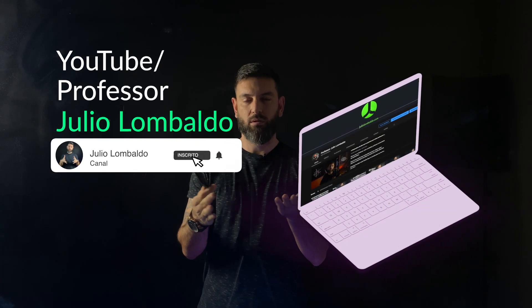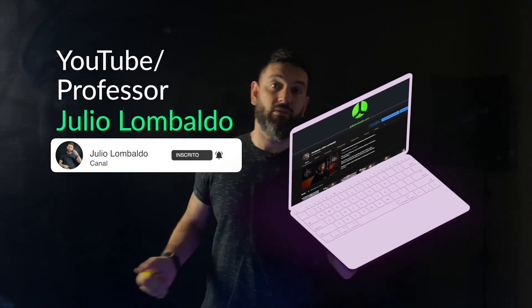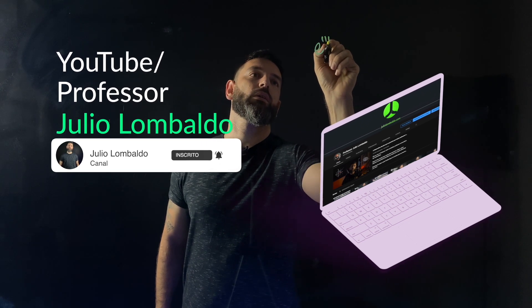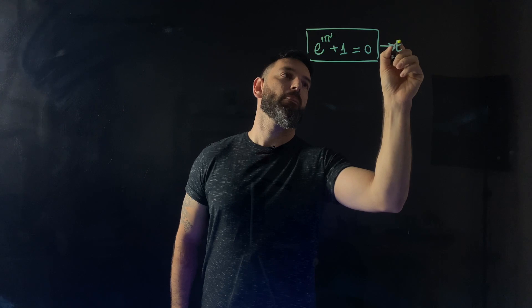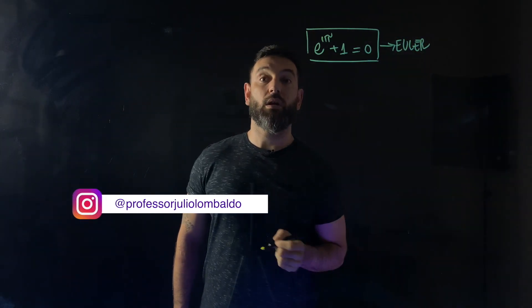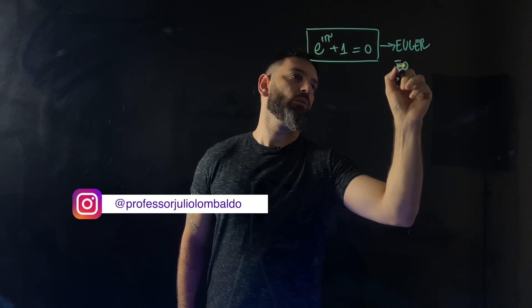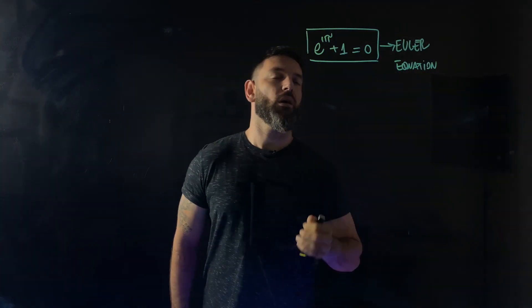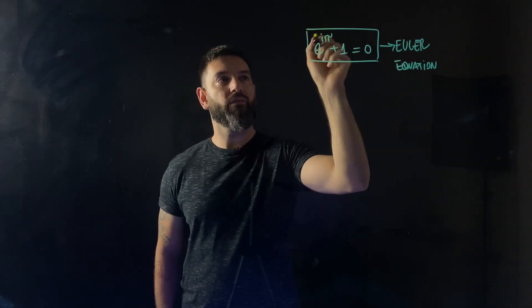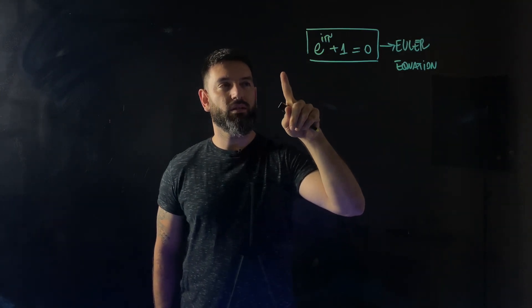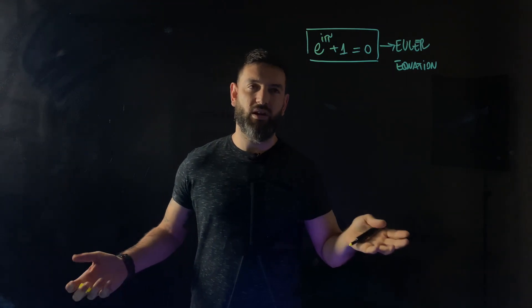Hey guys, how are you? These days I just ask myself why Euler's equation works. You know Euler's equation — it's very famous. For example, when you put something like e^(iπ) + 1 equals zero, that is the famous Euler equation. Euler is a very smart guy, but why does Euler's equation really work?